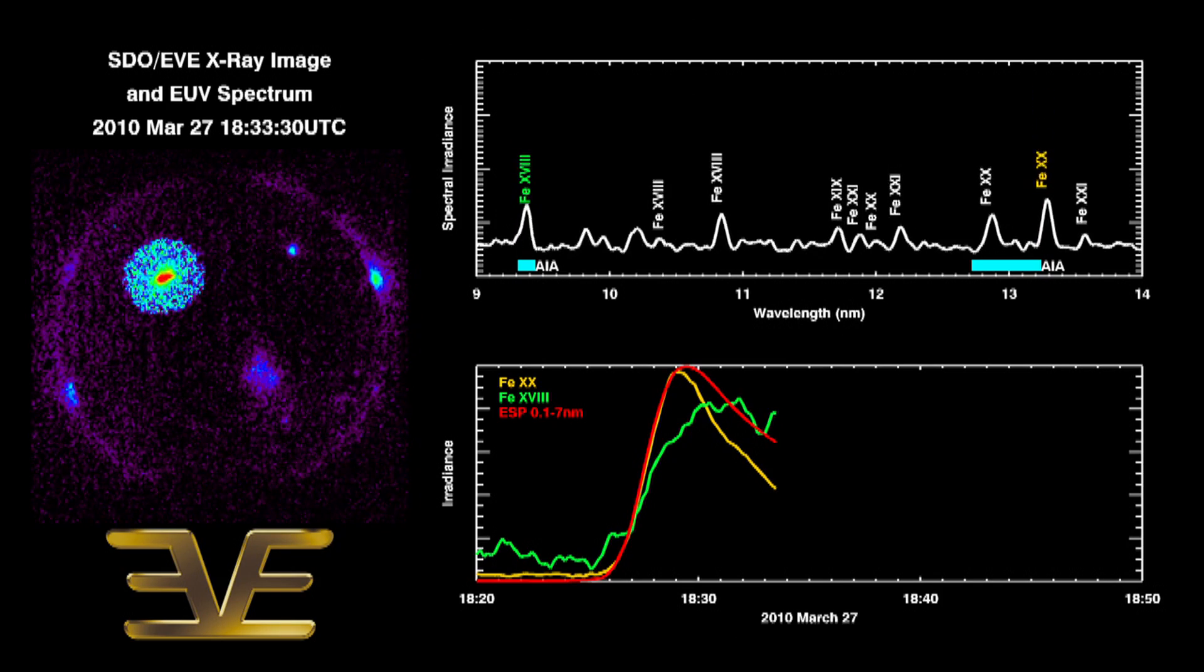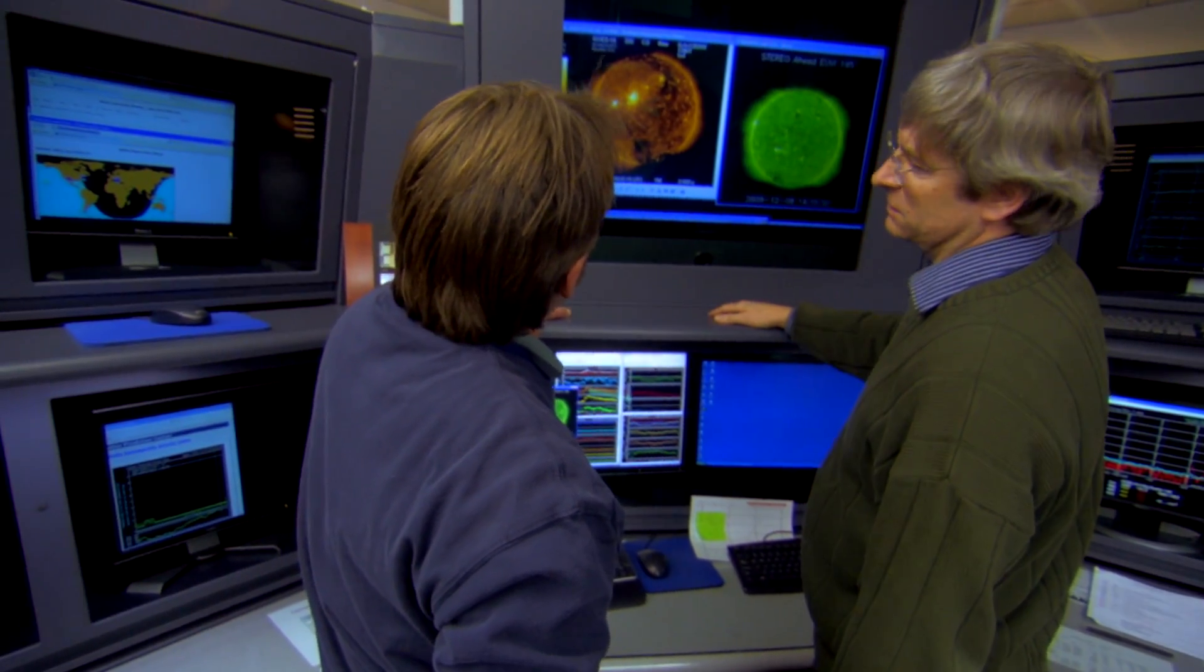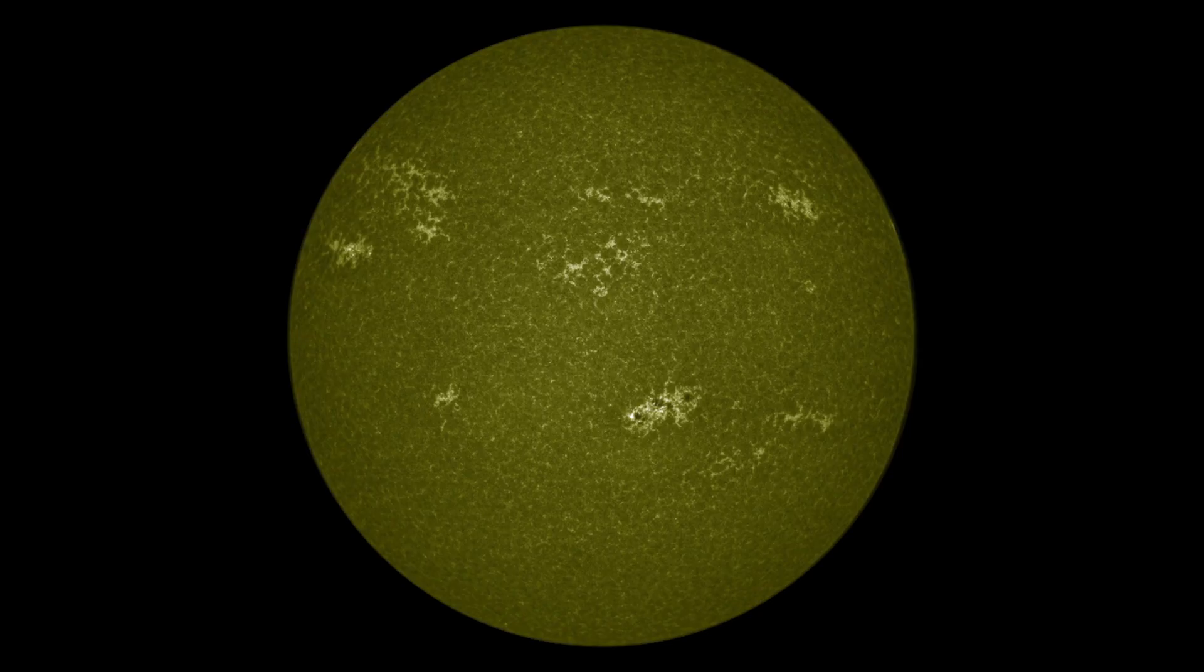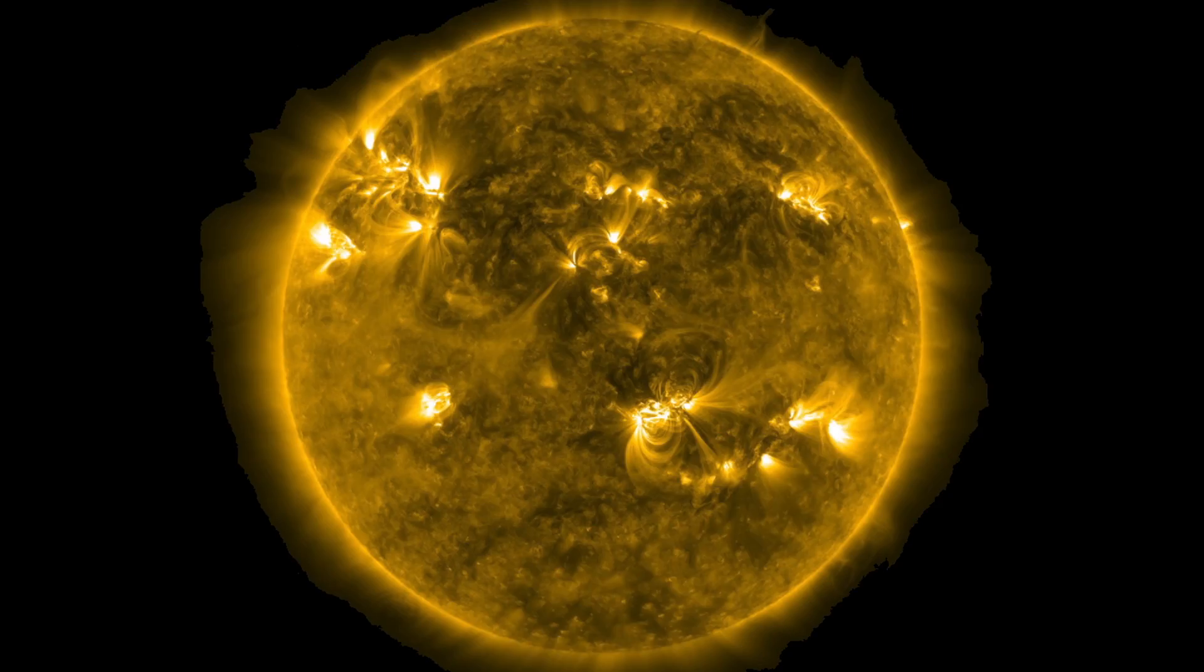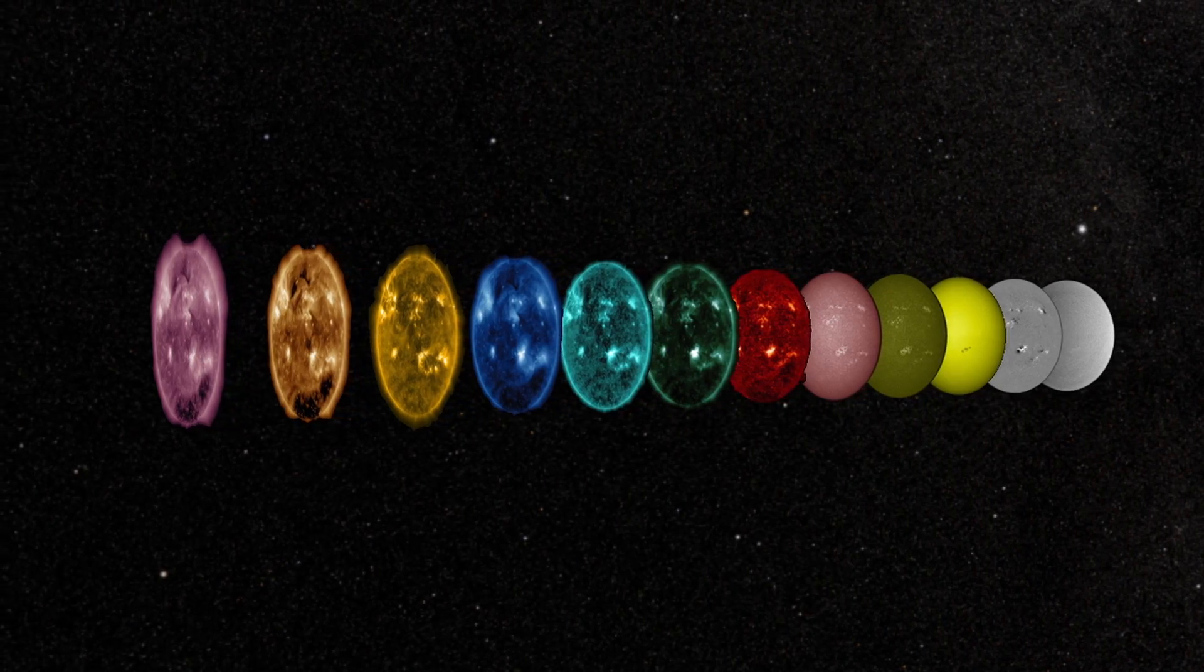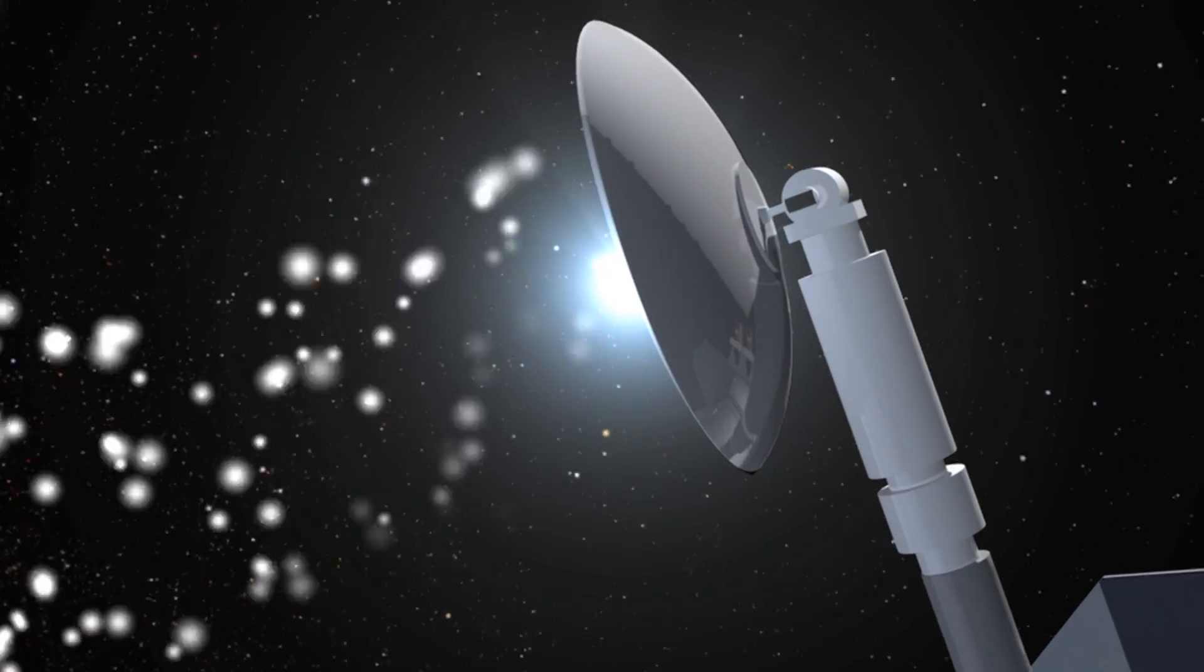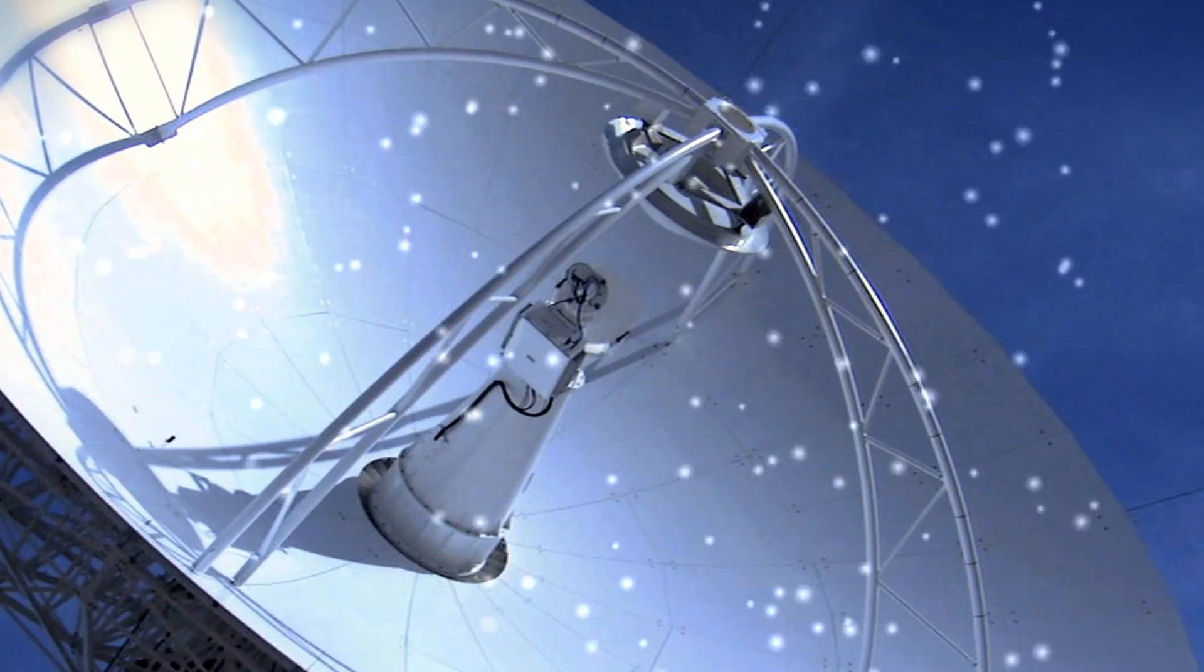The seriousness of an X-class flare pointed at Earth is why NASA and NOAA constantly monitor the sun. NASA's heliophysics fleet of spacecraft can now see the sun from every side and in many different wavelengths. This unprecedented coverage is enabling scientists to predict and detect space weather events like flares and CMEs with ever greater accuracy.